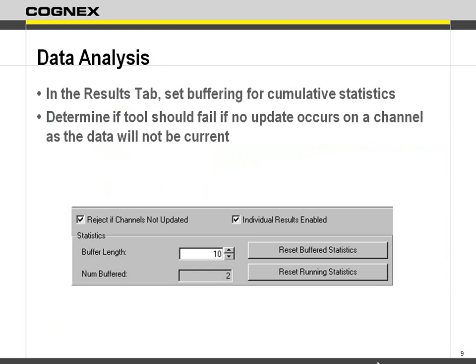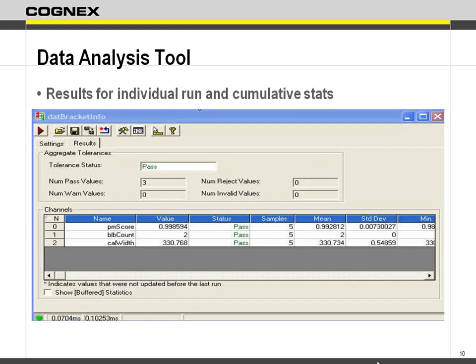Inside the results tab it gives you information about how many statistics you want to buffer, how many it's already buffered, and whether you want it to reject if the channels are not updated. If the tool doesn't run, the data inside the analysis tool is old or bogus data — so you're saying if it hasn't run, it fails. It will tell you the aggregate amount, how many were passes, warns, rejects, and invalids, as well as statistical information for each channel up to the buffered amount.